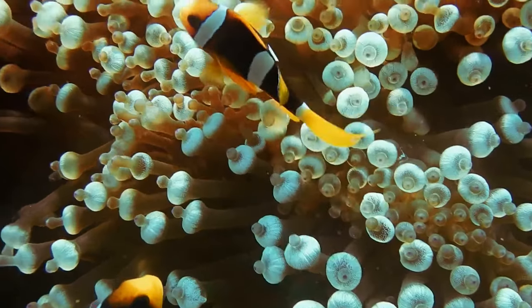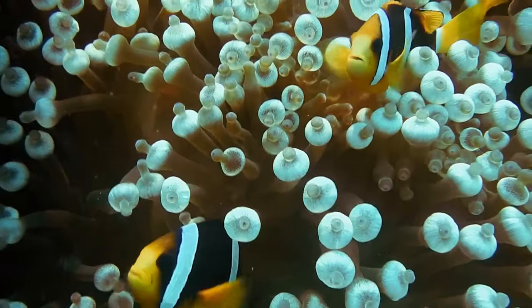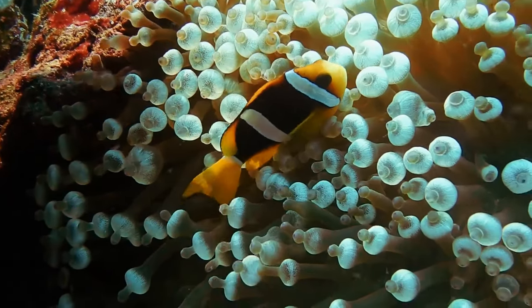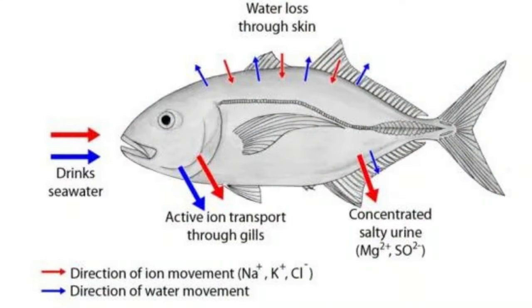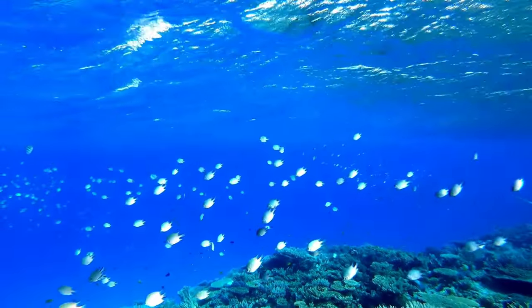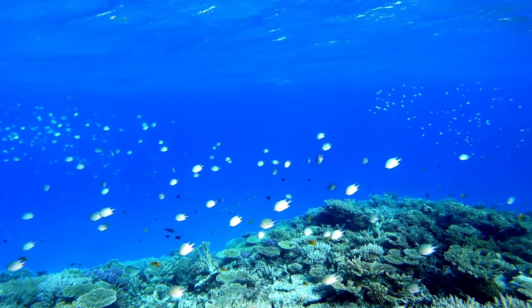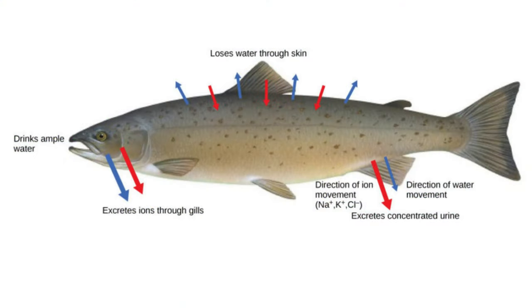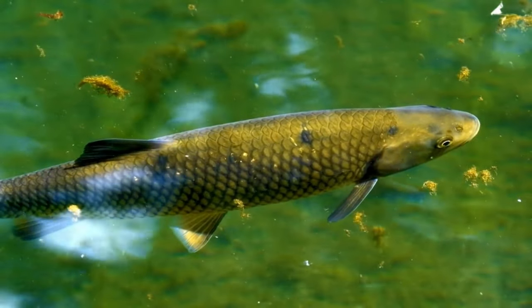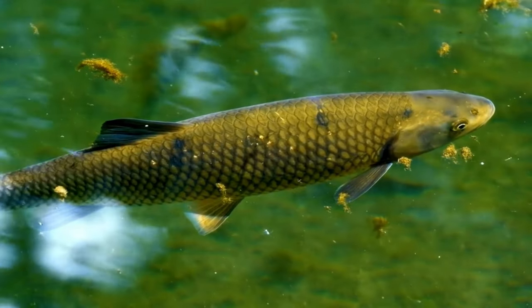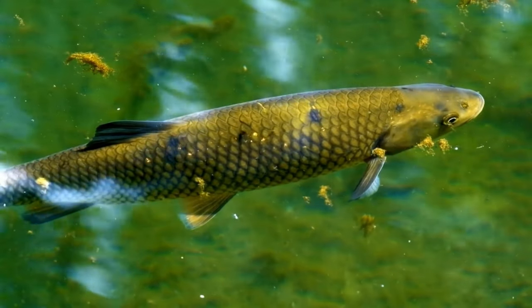One fundamental disparity between saltwater and freshwater fish lies in their remarkable osmoregulation mechanisms. Saltwater fish, known as osmoconformers, have adapted to match the salt concentration of their surroundings, maintaining equilibrium with the seawater that surrounds them. Conversely, freshwater fish have evolved as osmoregulators, taking charge of their internal salt concentrations independently, skillfully balancing salt levels within their bodies to ensure survival where salt content is considerably lower.